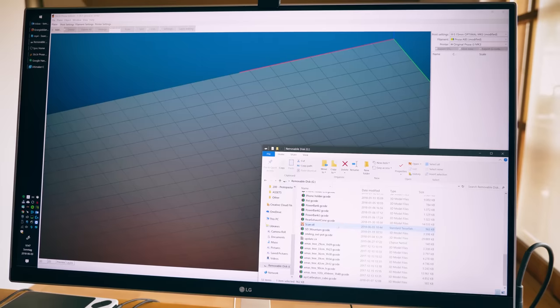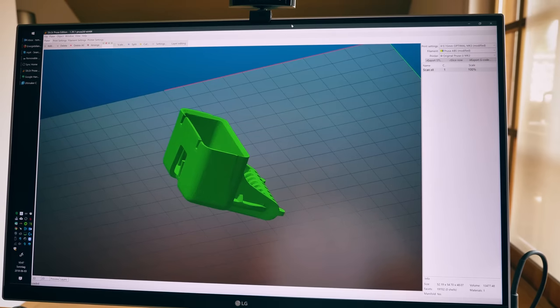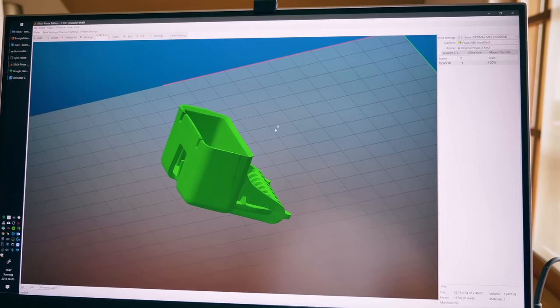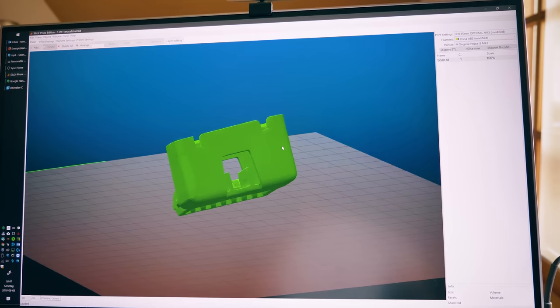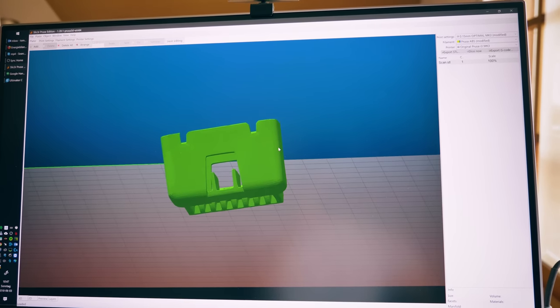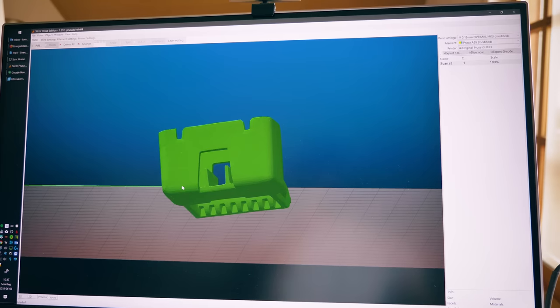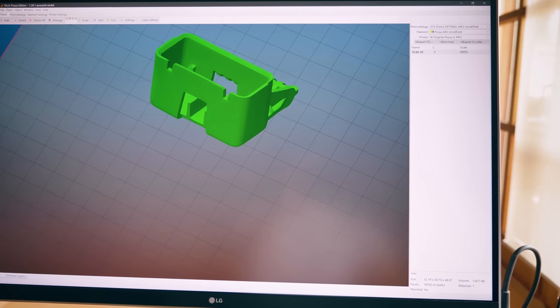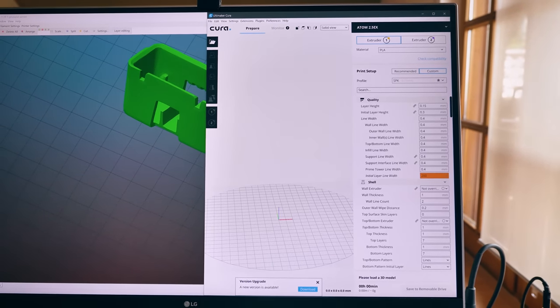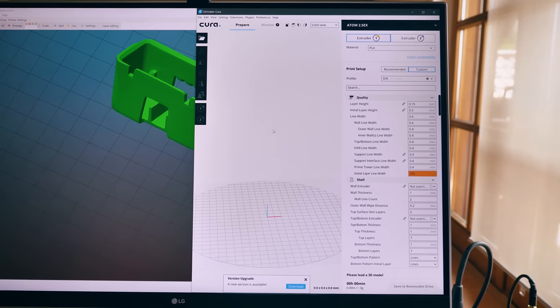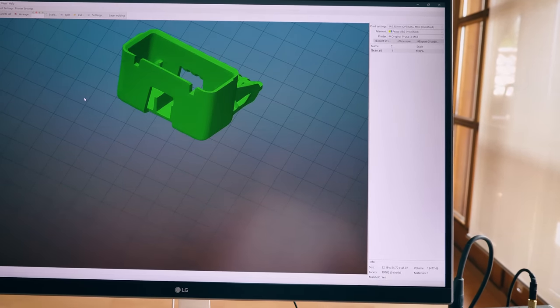All right, save. So here's the file loaded up in Prusa Slicethier, which is what I'm going to be printing this with. But the problem is the scan is kind of randomly oriented and Slicethier doesn't really have any good tools to rotate this. So I'm just going to take it into Cura instead and rotate it there and then export it back as an STL and load that up in Slicethier.